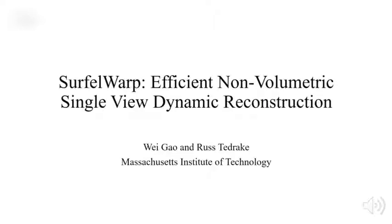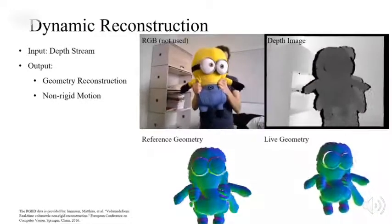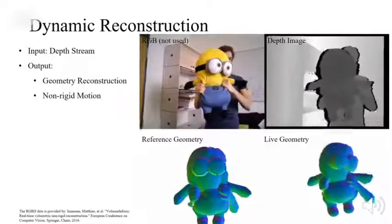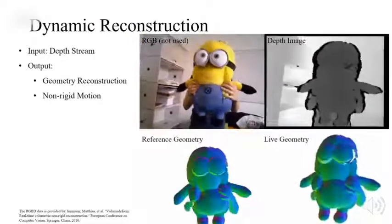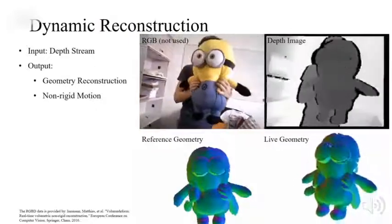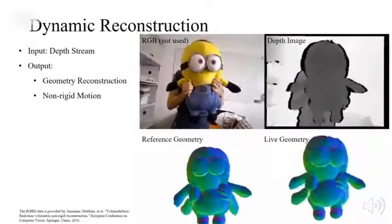We present SURFOR, an online non-volumetric dynamic reconstruction algorithm. Our pipeline takes input from a sequence of RGBD images, produces reconstructed geometry, and non-rigid motion as output.